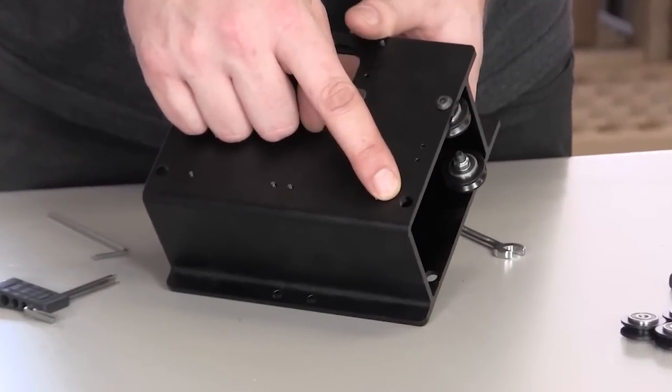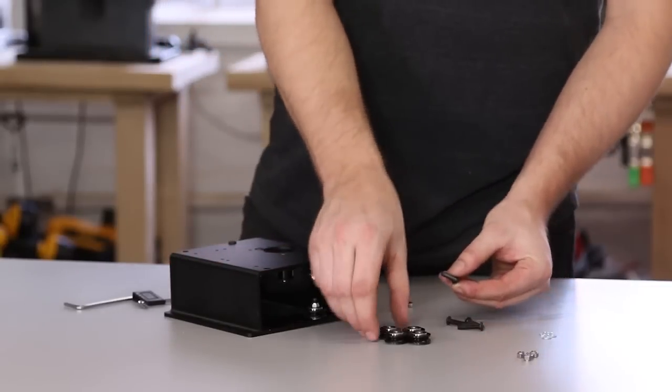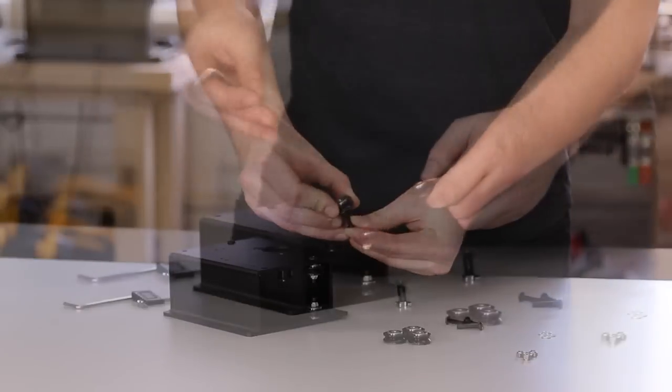Next, we'll put the V-wheels with eccentric nuts onto the X-carriage. Start by putting a screw through the V-wheel. Align it with a wrench if you have to.